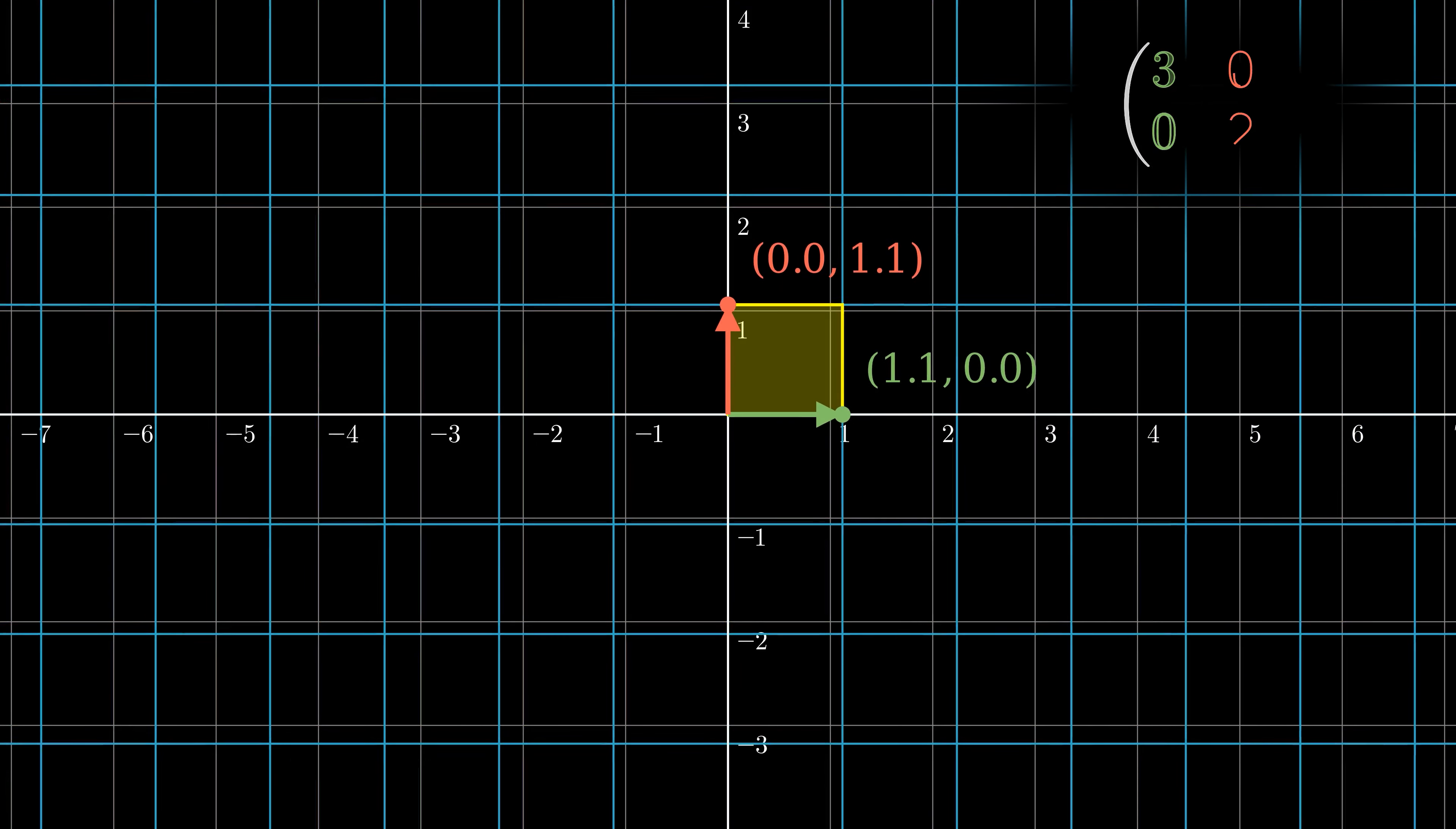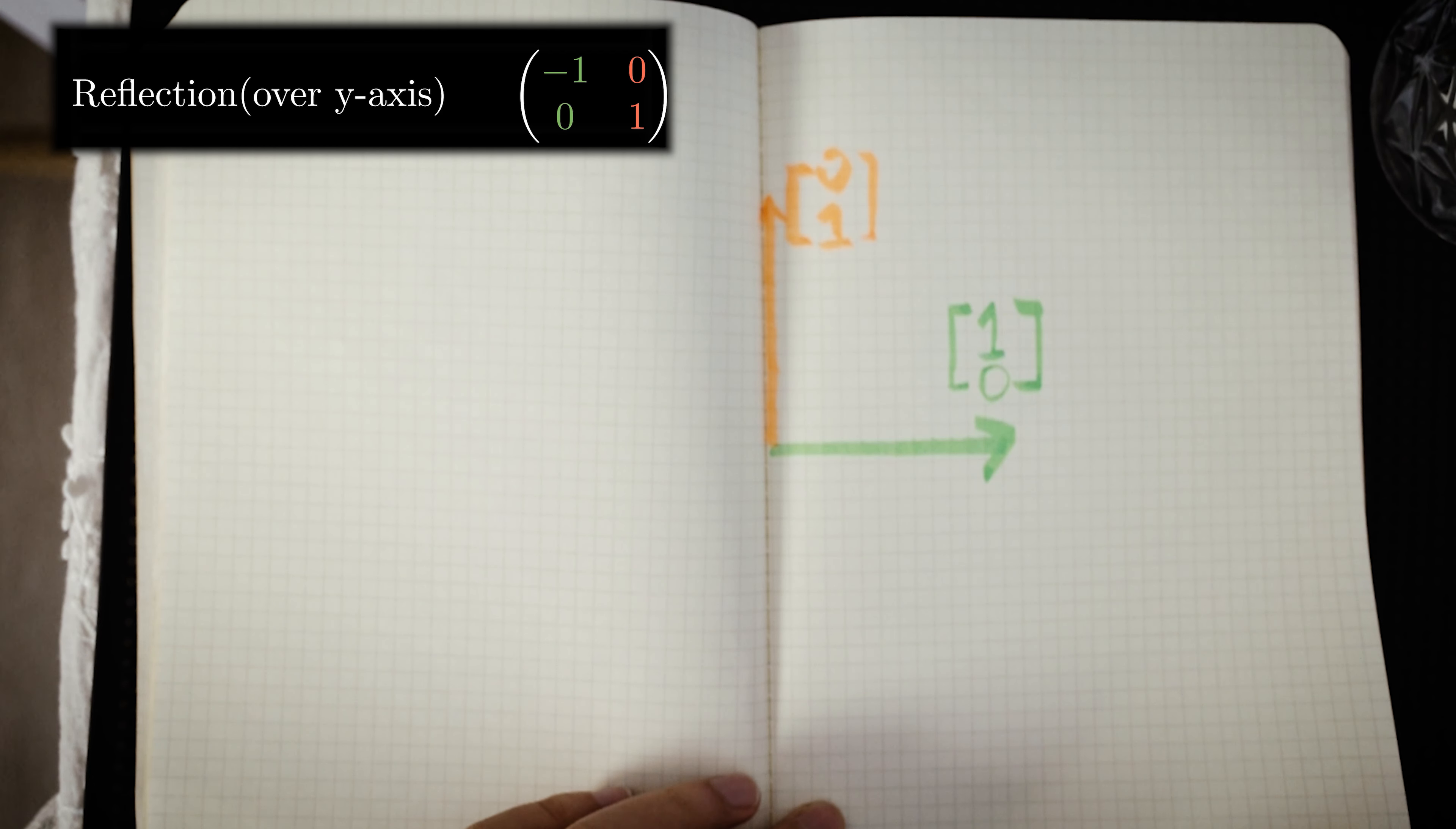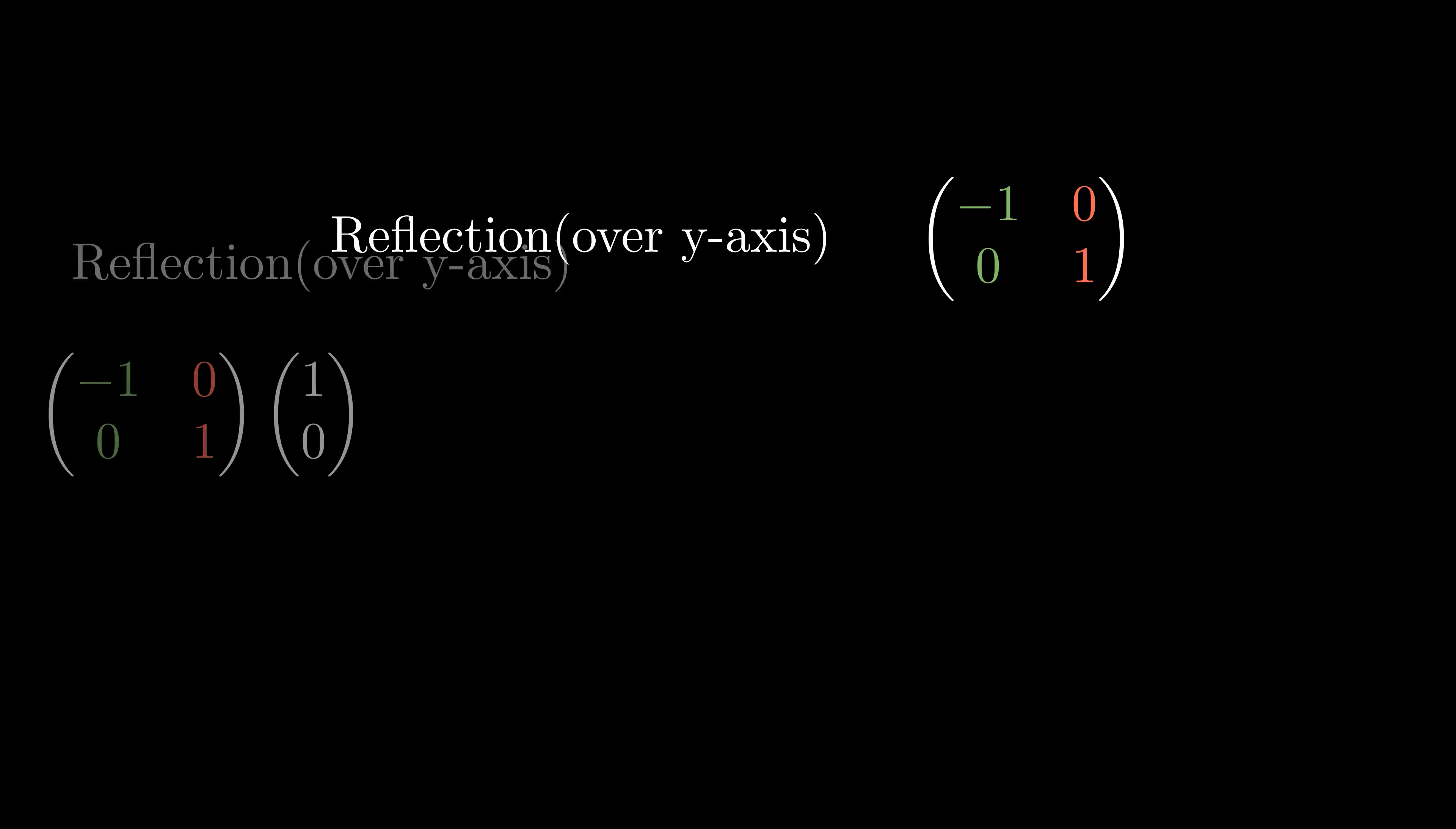Here is a matrix to shrink the size to half. You can also have a non-uniform scaling. Now we talk about reflection. First, start with reflecting over the y-axis.